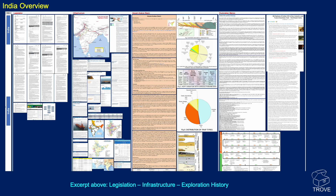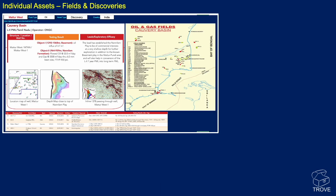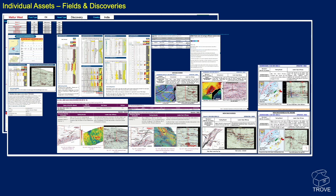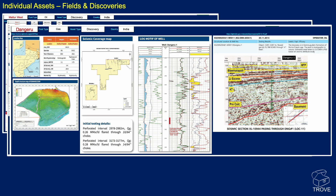You get an overview of India — in fact an overview of all the countries in the database — including legislation, infrastructure, and exploration history, all at the click of a button. You get individual assets: for example, Muttar West, where you can see location, a map showing the structure, and a seismic line, plus background information on what was found. Here's another series of assets off the east coast — numerous discoveries, all collated, all searchable, all tabulated. You get a structure map, a reservoir log, a seismic line, and information about what was found in each well.